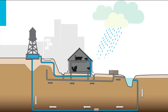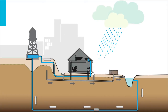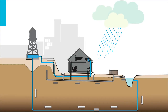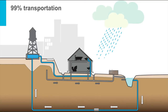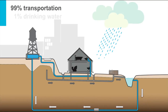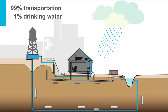Following the urban water chain, the treated and distributed drinking water finds its way to all households and industrial appliances. At both uses, water is generally used for cleaning or transport of waste products and only a very limited amount is actually used for drinking. In fact, less than 1% of the water supplied to households.